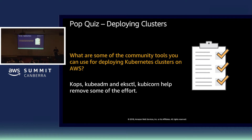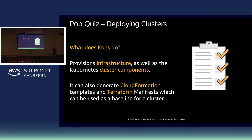Just a quick pop quiz to check everyone is listening. What are some of the community tools we're using today to deploy these clusters? KOPS, KubeADM, EKSCTL, Kubicorn — there are plenty of options out there. What does KOPS do for us? It provisions infrastructure as well as the Kubernetes cluster components and configurations. It also allows us to create templates we can use to provision our own best practice clusters. What does EKS provide? A fully managed control plane — including the highly available masters and etcd.